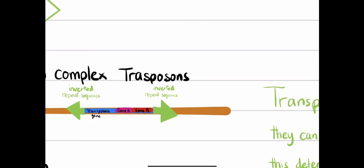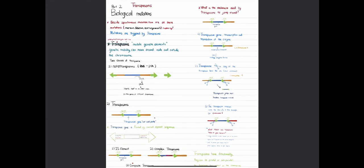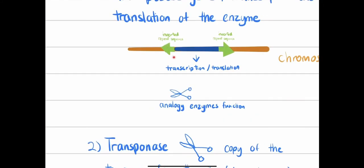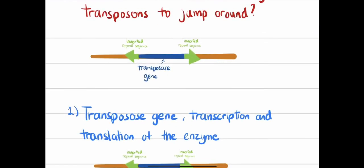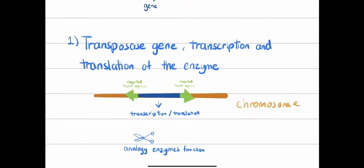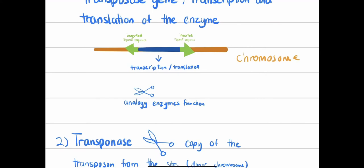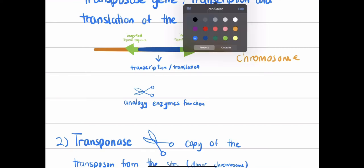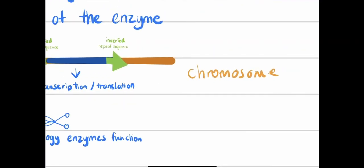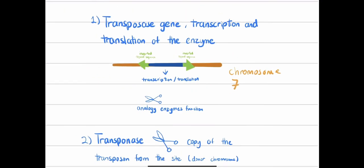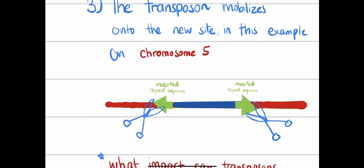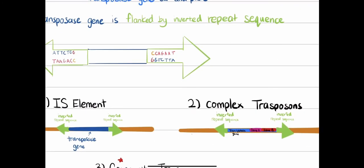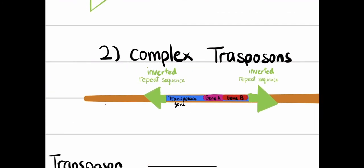For example, a complex transposon on chromosome 7 can take its genetic information and jump off to chromosome 5. So the genes carried by the transposon are moved from one chromosomal location to another. That is the entire idea behind transposons — moving genetic information from one place to another.